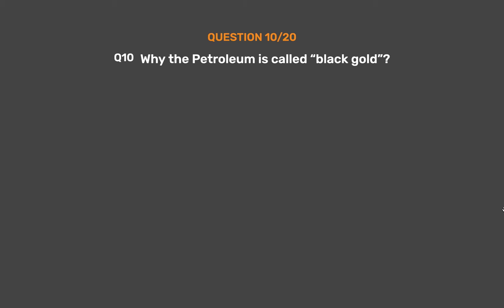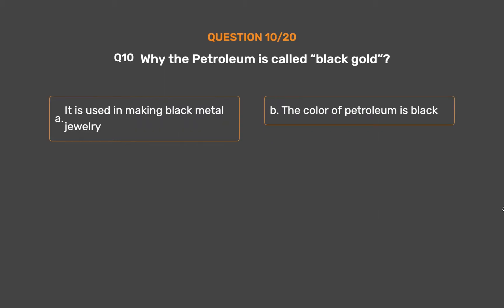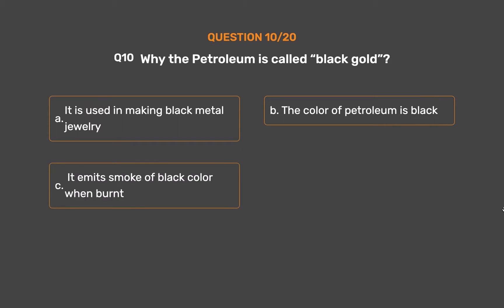Question 10: Why is petroleum called black gold? Option A: It is used in making black metal jewelry. Option B: The color of petroleum is black. Option C: It emits smoke of black color when burnt. Option D: It has immense value.